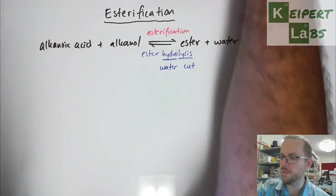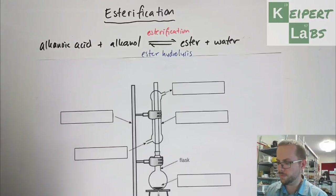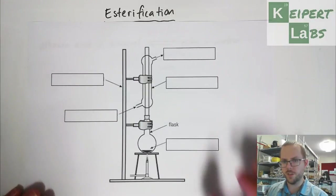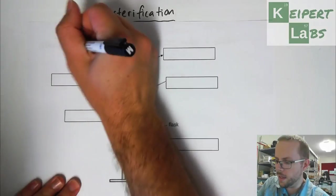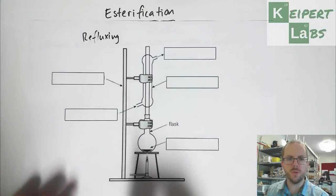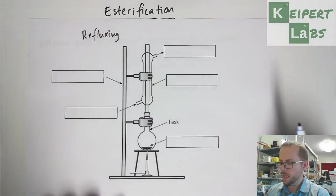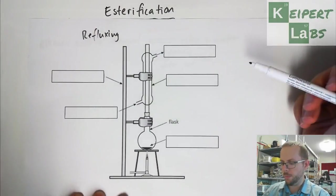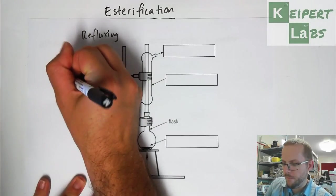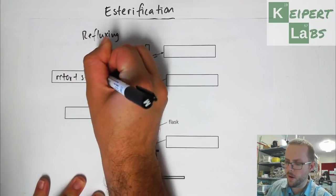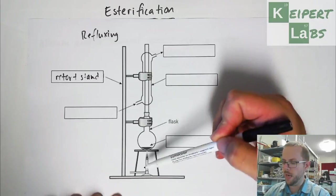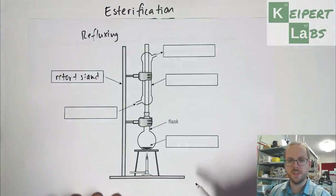So I'm going to show you a diagram of the actual equipment that we use when we're carrying out esterification. This equipment is known as refluxing apparatus. So what we have is that we've got a number of bits of equipment. The first one which should be fairly familiar by now is we've got a retort stand over here that we're using to connect up and support this setup of equipment.